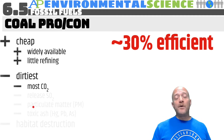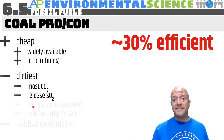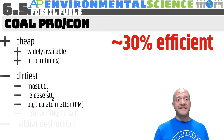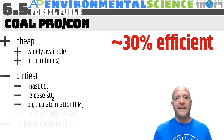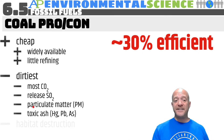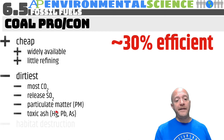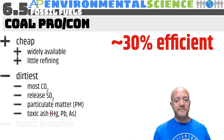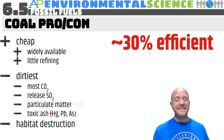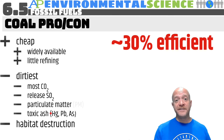Coal is the dirtiest fossil fuel: it produces the most carbon dioxide, releases sulfur dioxide which contributes to acid precipitation, and releases particulate matter — black soot that can get into our lungs and exacerbate respiratory problems. Coal also produces toxic ash containing large amounts of mercury, along with lead and arsenic. Mercury is the most important to remember, as it contributes to developmental and neurological disorders. To obtain coal, we must dig up mountains, causing major habitat destruction associated with open-pit coal mines.